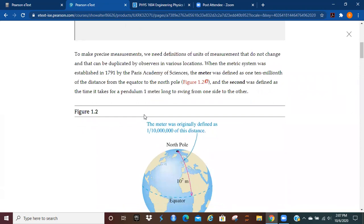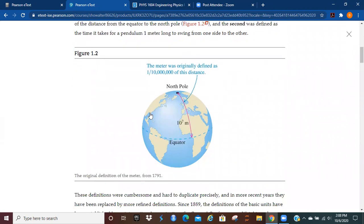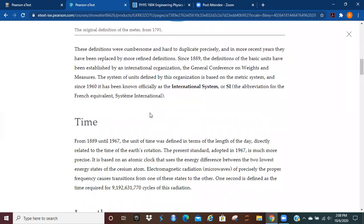When the metric system was established in 1791 by the Paris Academy of Sciences, the meter was defined as one ten millionth of the distance from the equator to the North Pole. And the second was defined as the time it takes for a pendulum one meter long to swing from one side to the other. In 1791, that's kind of hard to reproduce precisely. And so, those definitions ended up starting to get replaced.